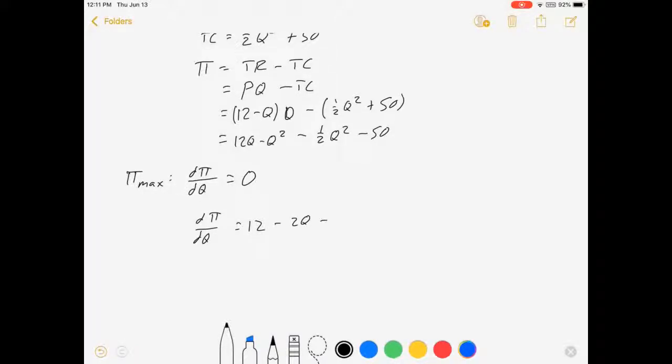And then minus, 2 times the half is 1, so just minus Q. And then the 50 doesn't get anything. And I'm going to set all of that equal to zero. Now what do we get here? That's 12 - 2Q equals Q.